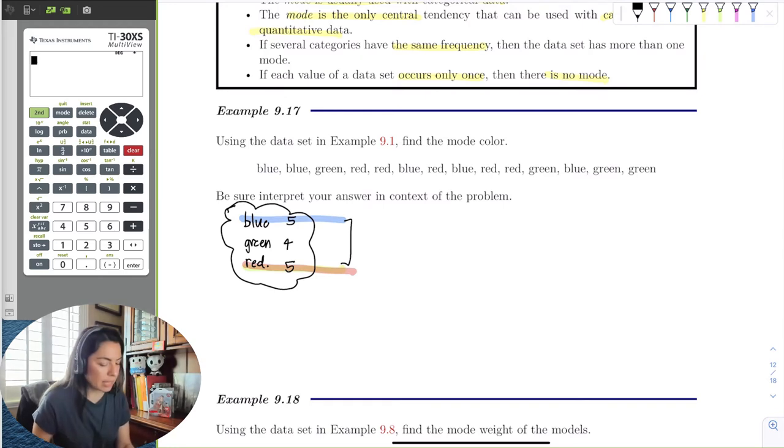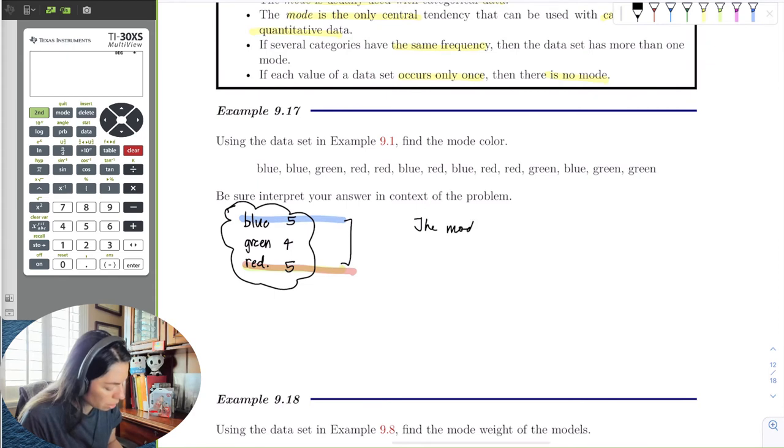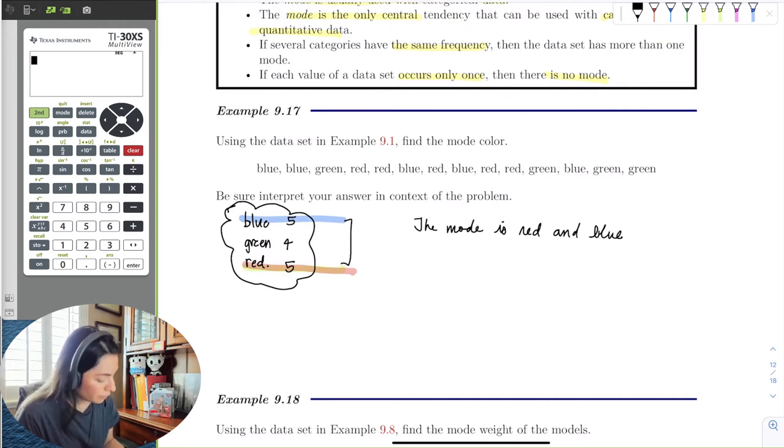This means that they have more than one mode, and the mode is going to be those two colors. So we would say the mode is red and blue because they occur the most.